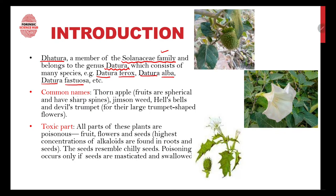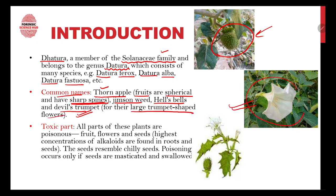Dhatura has a number of common names. One is 'thorn apple' — its fruits are spherical and have sharp spines, giving it an apple-like shape with thorns. It is also known as jimson weed, hell's bells, and devil's trumpet. It is called devil's trumpet because of its large trumpet-shaped flower, which resembles the musical instrument.